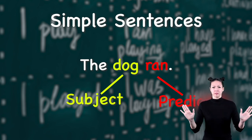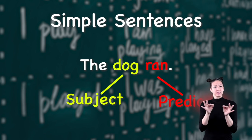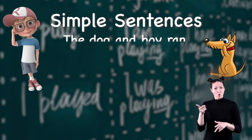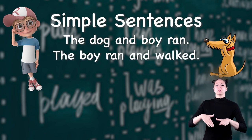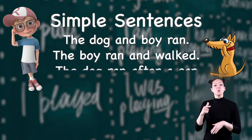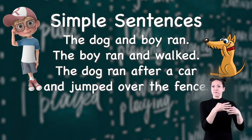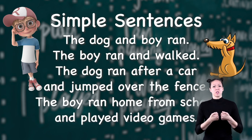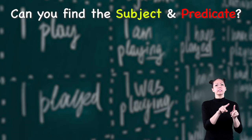But even if we add more information to the sentence, it's still a simple sentence. For example: 'The dog and boy ran.' 'The boy ran and walked.' 'The dog ran after a car and jumped over the fence.' 'The boy ran home from school and played video games.' Those are all simple sentences.